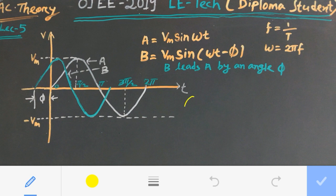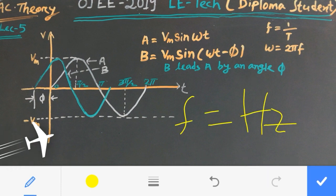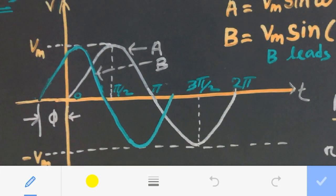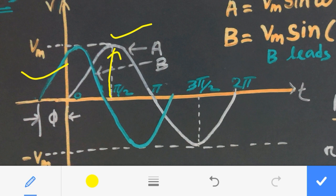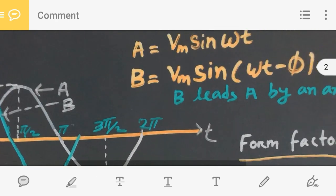The unit of frequency is Hertz. The signal A or signal B, the maximum amplitude is this maximum value. It may be a voltage signal or may be a current signal. Here I am representing the voltage signal. This is the maximum value.